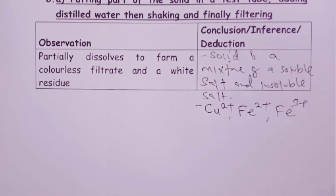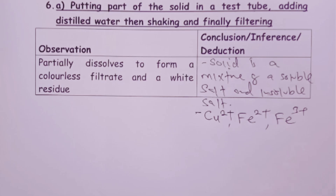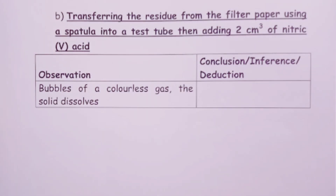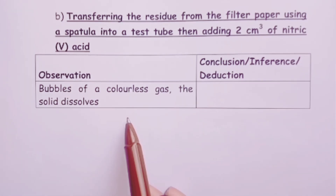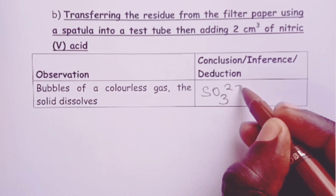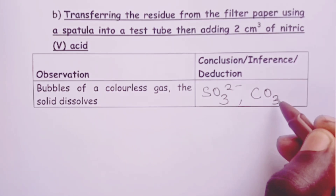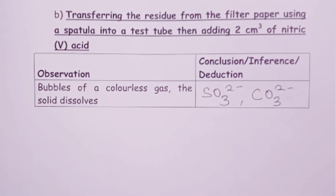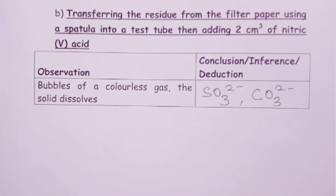The residue obtained is transferred to a test tube and nitric acid is added. We expect bubbles of colorless gas and the solid dissolves in the acid. The inference is that sulfite or carbonate ions are present. We do not conclude sulfate because nitric acid cannot displace sulfate ions — nitric acid is the more volatile acid compared to sulfuric acid.